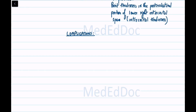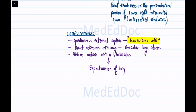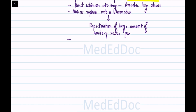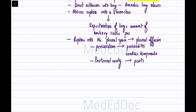Complications: Spontaneous external rupture can result in granuloma cutis. Direct extension into the lung may cause amoebic lung abscess. Abscess rupture into a bronchus leads to expectoration of large amounts of anchovy sauce pus. Rupture into the pleural space can result in massive pleural effusion. Rupture into the pericardium may cause pericarditis and, rarely, cardiac tamponade. Rupture into the peritoneal cavity can lead to peritonitis.